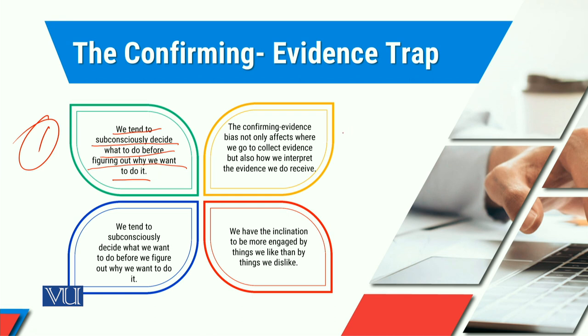The second thing associated with the confirming evidence trap is that the confirming evidence bias not only affects where we go to collect evidence, but also how we interpret the evidence we do receive.